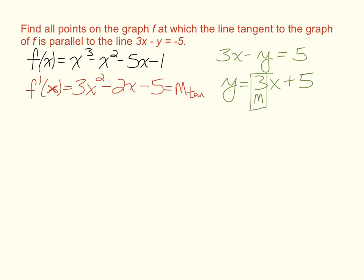We need the x values that give us a slope of 3. So I am going to substitute this value 3 in for the slope of the tangent line in our derivative, and we will solve for x. So add 3 to both sides. You get 3x squared minus 2x minus 8 equals 0.